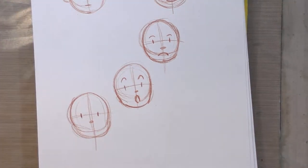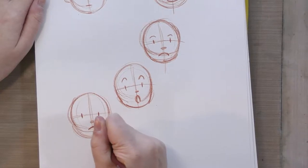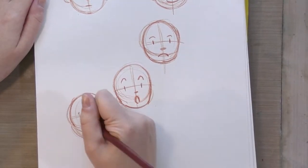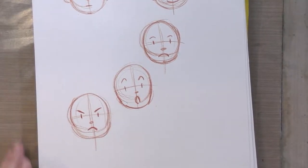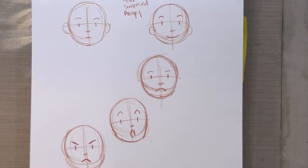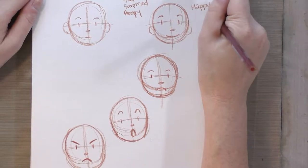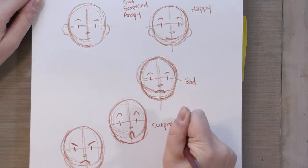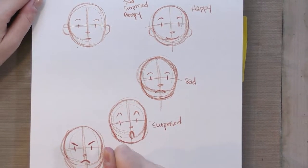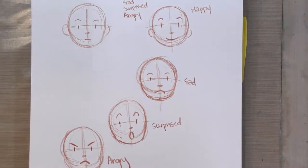And then finally we have angry. We've sketched the basic face — what does an angry person's face look like? Well they might frown like they're sad, and their eyebrows go in like that. So we have five really basic emotions: a neutral face, happy, sad, surprised, and angry. Okay, so let's try developing these just a little bit more — let's see if we can push them.